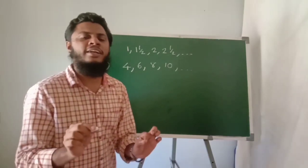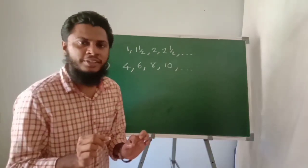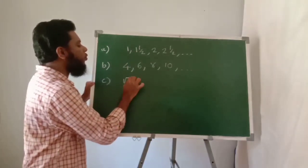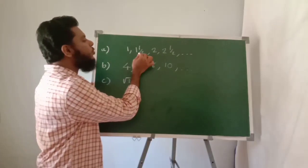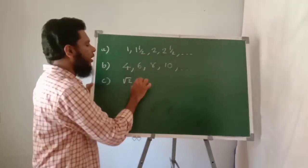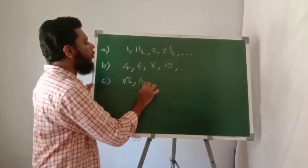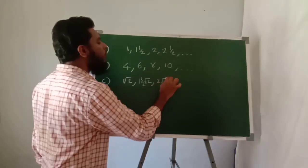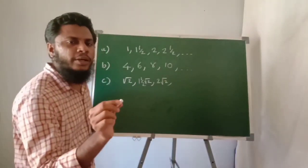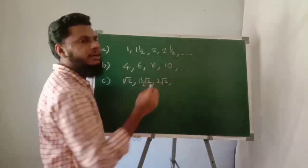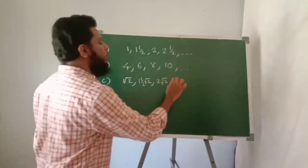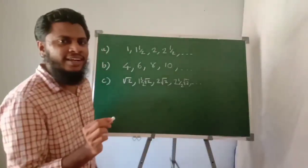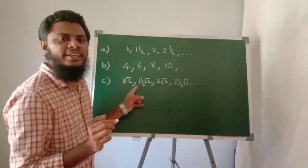Continuing the calculation: 4 times 2 equals 8; 4 times 2 and a half equals 10. This is the diagonal sequence of areas.